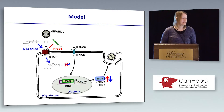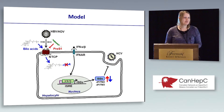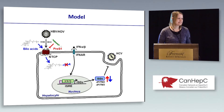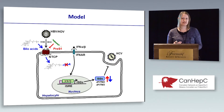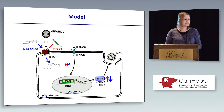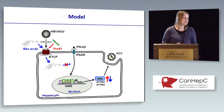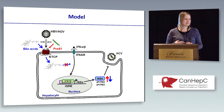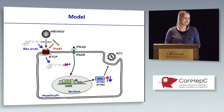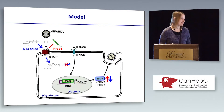In conclusion, our model is that bile acid transport through NTCP normally suppresses innate antiviral responses by blocking the interferon alpha pathway, leading to reduced ISG expression and therefore enhanced viral infection. But if we add pre-S1, we block bile acid transport, which alleviates this bile acid-mediated suppression of innate antiviral responses, and we increase ISG expression to restrict viral infection.